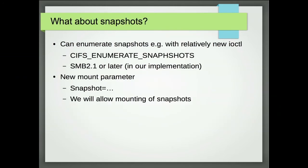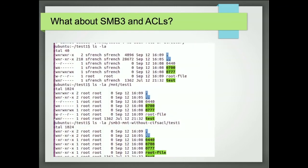For snapshot support: we added the ability to enumerate snapshots for SMB2.1 or later, and a mount parameter allowing you to mount with a snapshot appended, so you can basically get a previous version of a file. We're most of the way there — you can enumerate them today, but it's not quite finished.